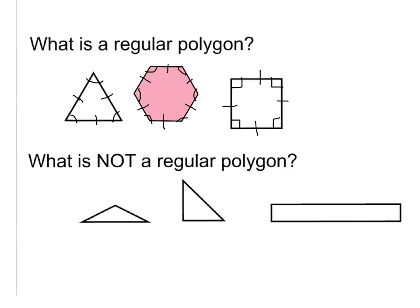Now let's take a look at some not regular polygons. This polygon right here is called an isosceles triangle. Two lengths are the exact same, but the bottom length is longer. Because it does not have all equal sides, it's not a regular polygon. Let's look at this right triangle. I know that this is not a regular polygon as well, because all my sides are not the same length and all the angles are not the same — we have a right angle here, but we have acute angles there.